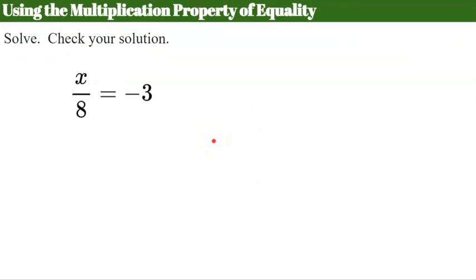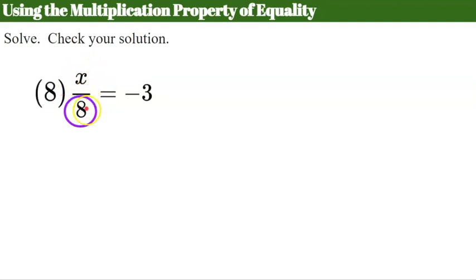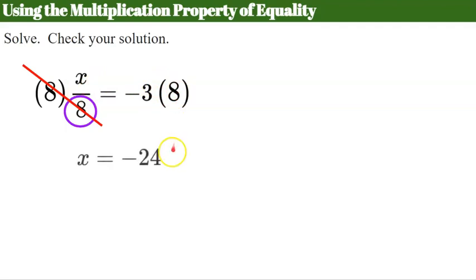Now let's use this property to solve an equation. I have x divided by 8 — don't forget the fraction bar is also a division symbol — equals negative 3. The inverse of divide by 8 is to multiply by 8. To get x alone, I multiply both sides by 8. On the left, 8 divided by 8 is 1, leaving just x. On the right, negative 3 times 8 equals negative 24. So my solution is x equals negative 24.